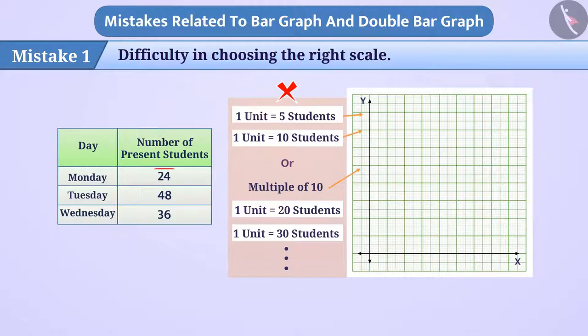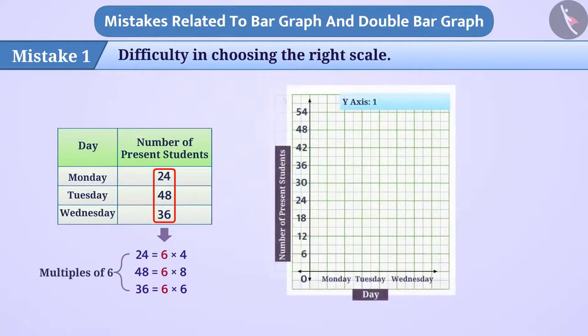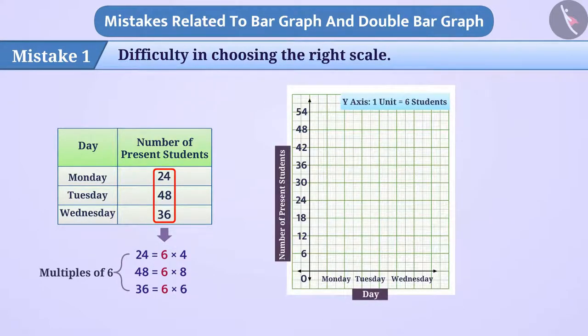Here we see if all the numbers are multiples of 6, therefore it will take 1 unit is equal to 6 students. Then it will be very easy to draw the bar graph.